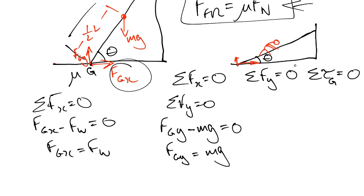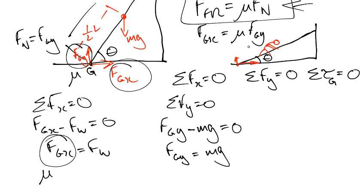So far, so good. Let's see where we can go with this. This guy, FGX. Well, for the maximum situation case, that's going to equal μFN. And in this case, FN, which is this guy, the normal force at point G is equal to FGY. So FGX equals μFGY.